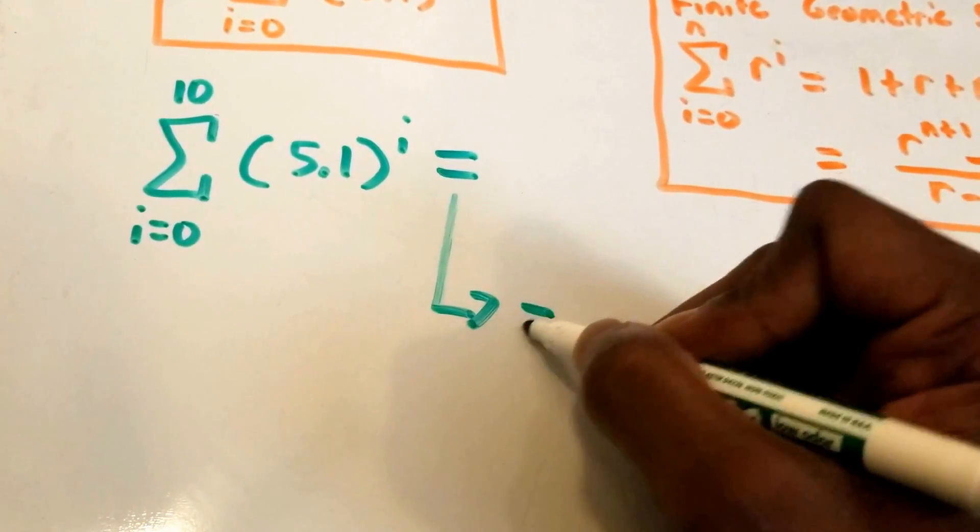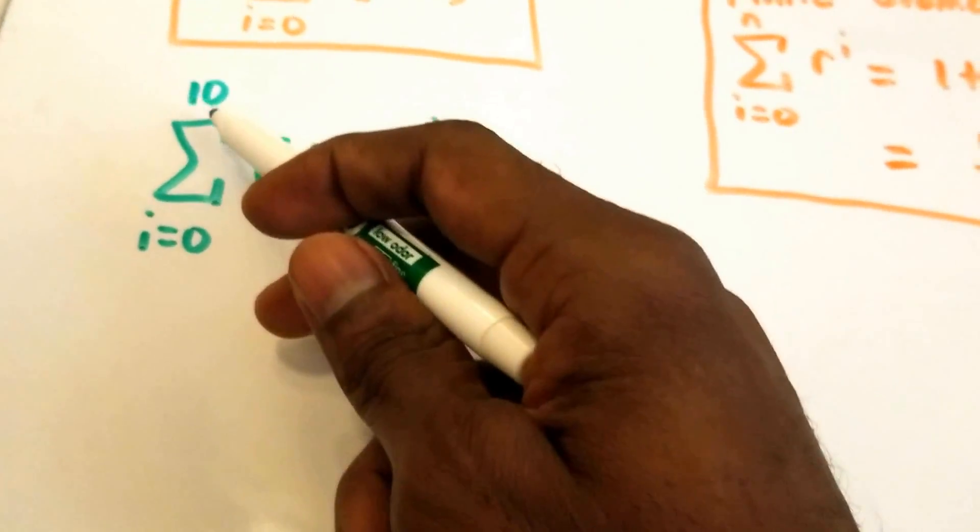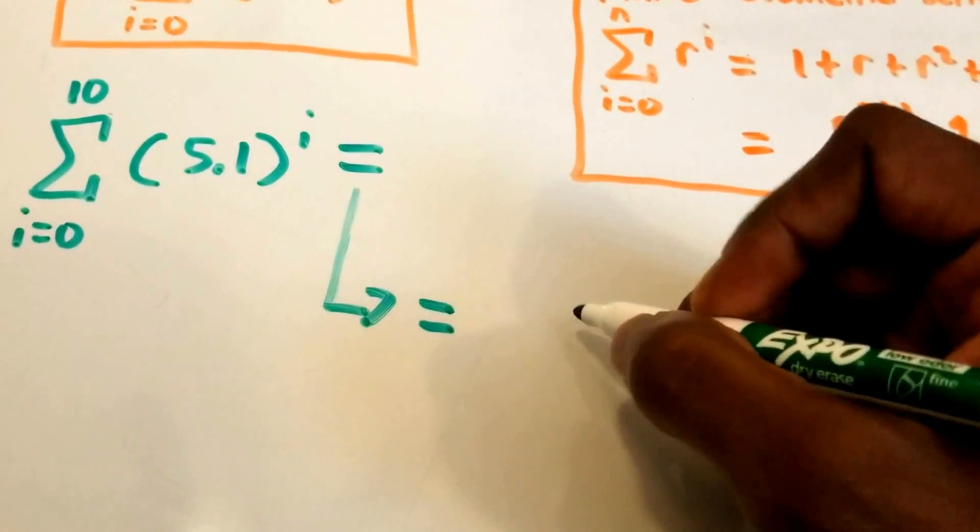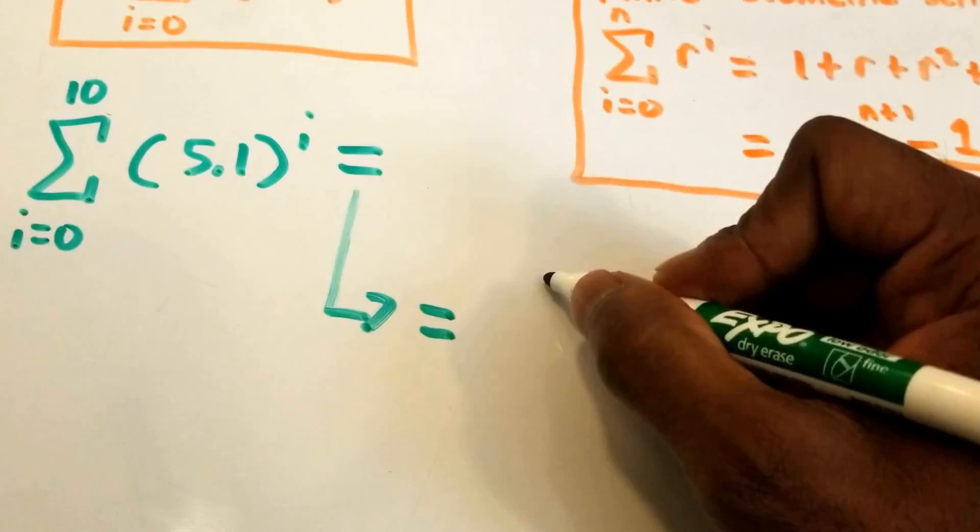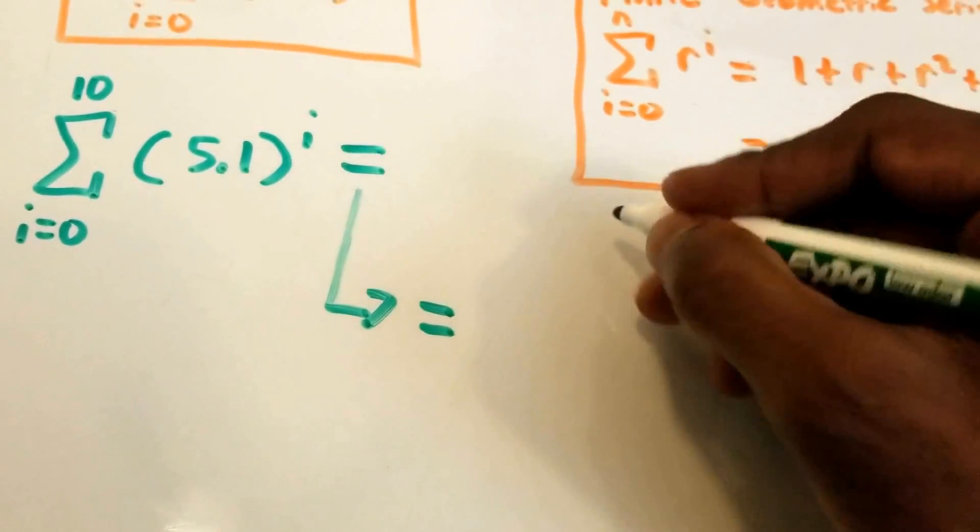...10 for the value in our formula. Oh, and we have to plug in r for 5.1, so let me write that down. r is going to be equal to 5.1, and n is equal to 10.